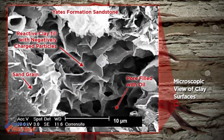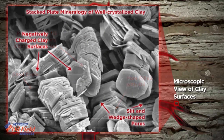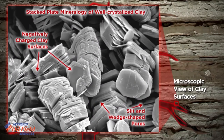Zooming in 15 times with a scanning electron microscope shows corrensite, which is an R1-ordered mixed-layer tri-octahedral chlorite and tri-octahedral smectite, filling sandstone porosity of the Yates formation. Note the well-developed cellular structure similar to that of smectite and the oil-filled pores. This SEM micrograph shows the stacked plate nature of a well-crystallized clay, with hexagonal morphology, smooth basal surfaces, and abundance of slit and wedge-shaped pores.